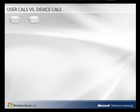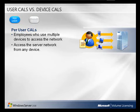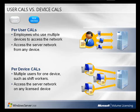There are two types of CALs. Per-user CALs are ideal for organizations that have employees who use multiple devices to access the network — they allow licensed users to access the server network from any device. Per-device CALs are ideal for organizations that have multiple users for one device, such as shift workers — they allow any user to access the server network on any licensed device. If you are looking at multiple server products, Core CALs or Enterprise CALs can be a good alternative.